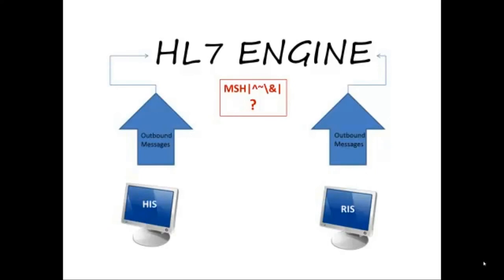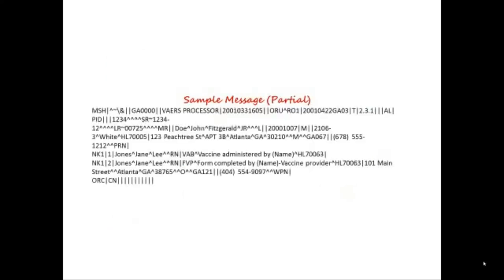When an integration engine sees a message, it can pull out all the important pieces of information and store it in a way that the applications can understand, like a database or a file. Also, when an engine sees a new record or result from the application, it can take the information and turn it into an appropriate HL7 message to be sent out to other applications for sharing, depending on their business needs.